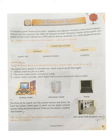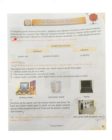Assalamu alaikum warahmatullahi wabarakatuh. Welcome children to a new class. Today we will start with lesson number two: the computer system. A computer system consists of two parts — hardware and software. Hardware is the actual computer. Software are the programs that make the computer function. Hardware consists of the system unit, which we had earlier referred to as CPU, and the devices connected to it, called peripheral devices.